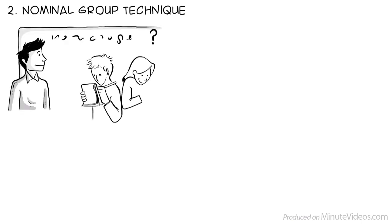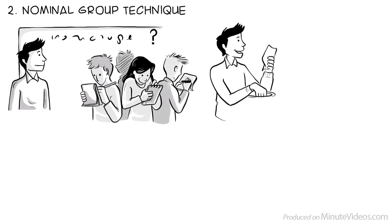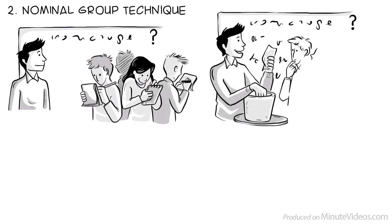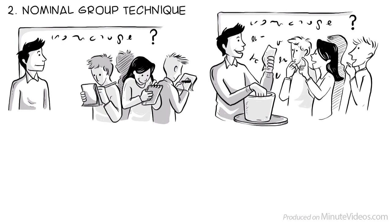The nominal group technique. Explain the ground rules and present the problem. Then ask each person to write their ideas anonymously. Then collect the ideas and let the group vote on each idea. The top-ranked ideas may be sent back to the participants or subgroups for further brainstorming.